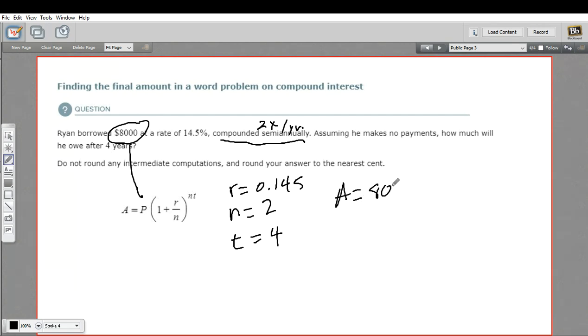So I've got the amount equaling the principal, $8,000. And here, one plus the rate divided by two, the rate is 0.145. That's divided by two. And that's to the two times four power.